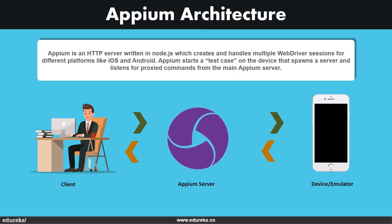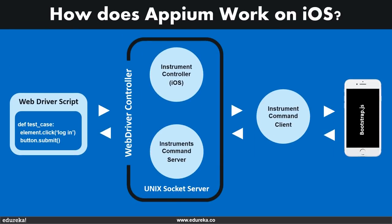Appium starts a test case on the device that spawns a server and listens for proxy commands from the main Appium server. It is almost the same as a Selenium server which receives HTTP requests from Selenium client libraries and handles those requests differently depending on the platform. On iOS, Appium proxies commands to a UI Automation script running in Mac's instrumentation environment. Apple provides an application called Instruments used for profiling, controlling, and building iOS apps, with an automation component where commands are written in JavaScript using UI Automation APIs to interact with the app UI.